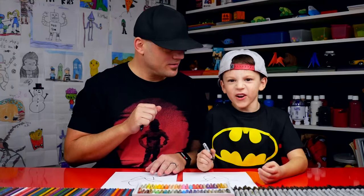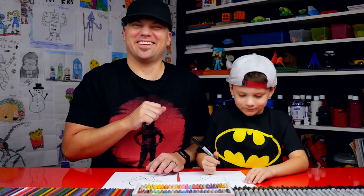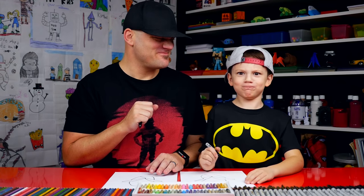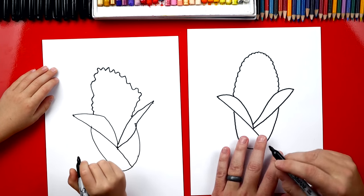But what's our corn missing now? A funny face. You do that every time. A funny face. Funny face. All right. Let's draw a funny face on our corn.